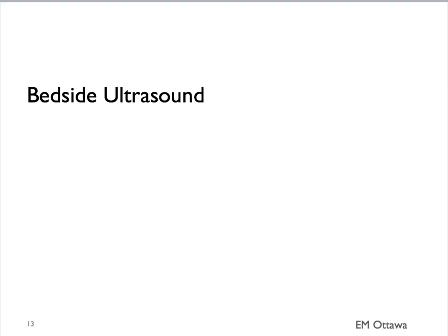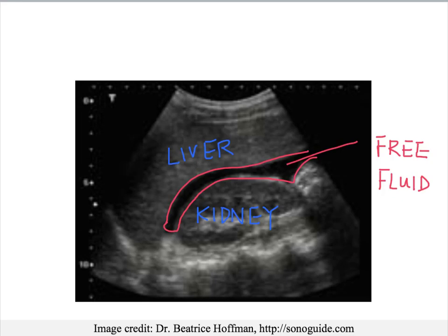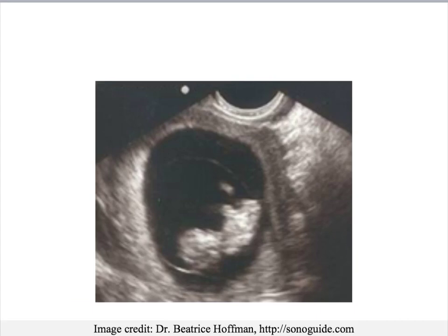In terms of ultrasound, bedside ultrasound can give us very specific information right at the bedside, including whether there is free fluid in the abdomen, whether there is an AAA, and whether there is an intrauterine pregnancy. In one still, the liver and kidney are visible with free fluid between them — which based on clinical context could be blood or ascites. Another still shows an enlarged abdominal aorta, and another shows a pregnancy within the uterus.